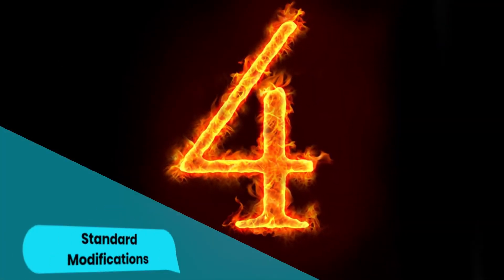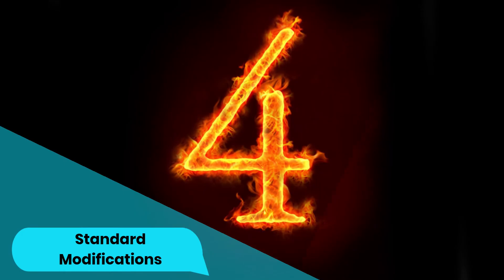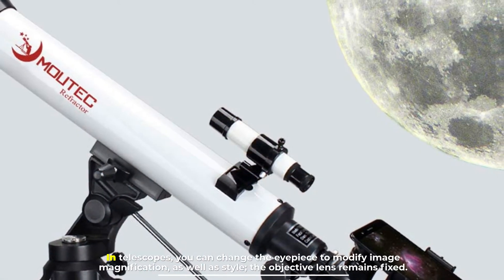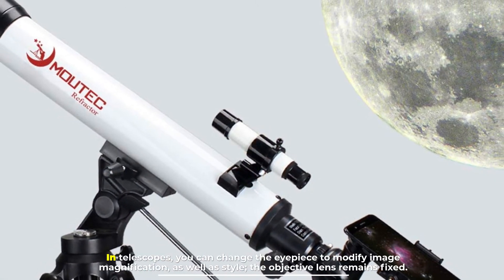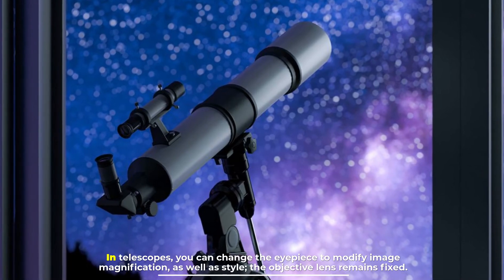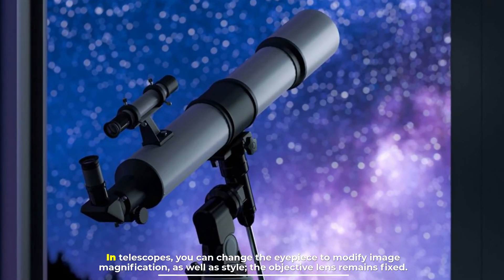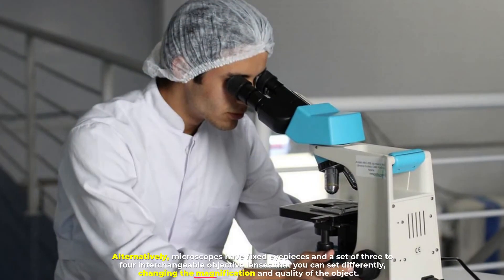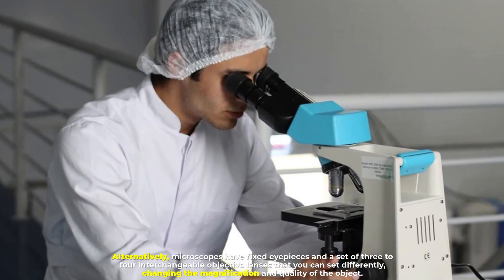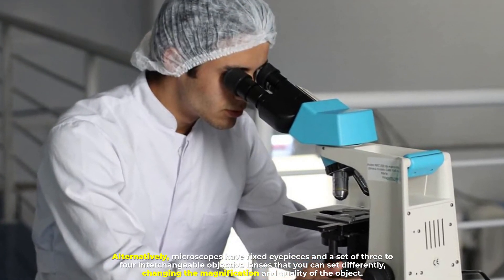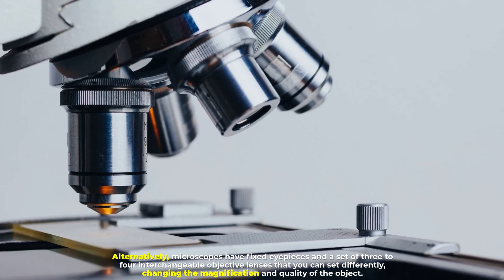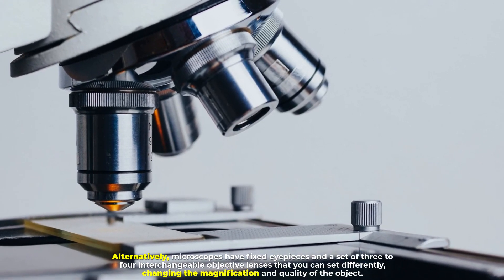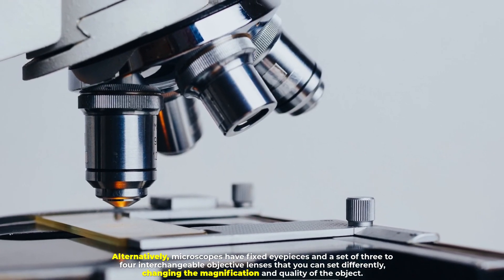Number four: standard modifications. In telescopes you can change the eyepiece to modify image magnification as well as style. The objective lens remains fixed. Alternatively, microscopes have fixed eyepieces and a set of three to four interchangeable objective lenses that you can set differently, changing the magnification and quality of the object.